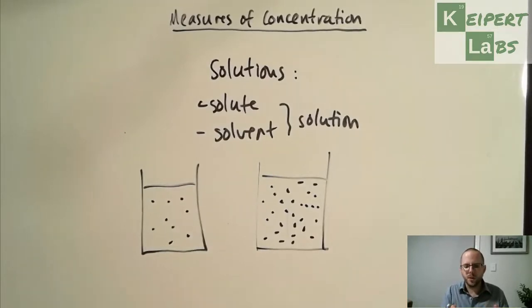It's like if you're making cordial at home. You take a certain amount of syrup and you mix it with a certain amount of water, and so you make it to a certain strength, and in chemistry terms, we would say you've made it to a certain concentration.